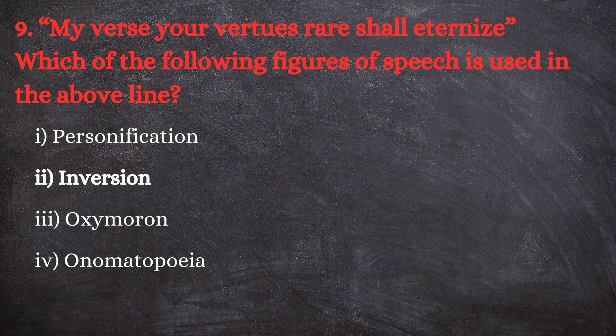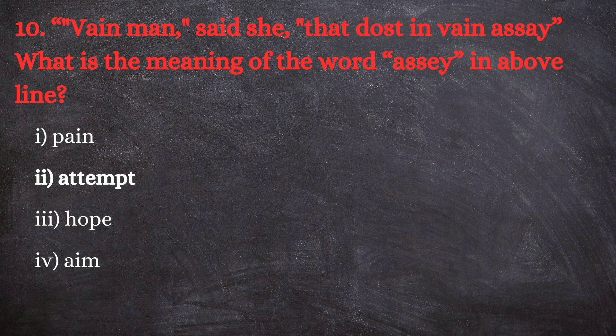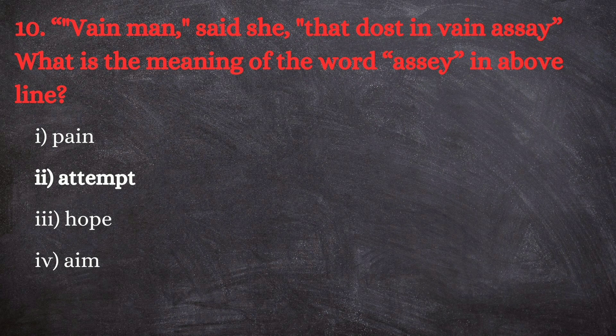Question number 10: 'Vain man said she, that doest in vain assay' — what is the meaning of the word 'assay' in the above line? The options are: first, pain; second, attempt; third, hope; and fourth, aim. The correct answer is attempt. Here the lady love is telling the beloved that he is making a futile attempt in his effort to immortalize the beloved. So 'assay' means attempt.